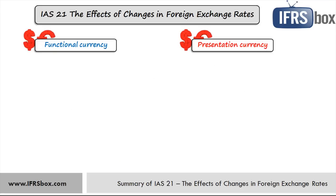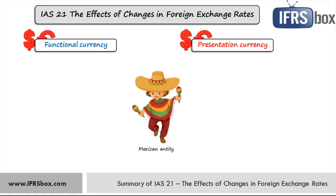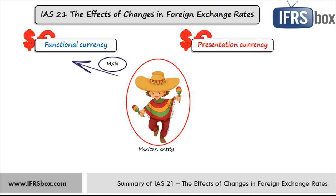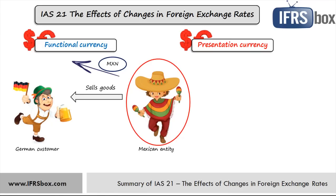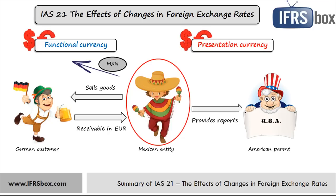Imagine there is a Mexican entity that operates in Mexico. The majority of its expenses are in Mexican peso, so its functional currency will be Mexican peso in most cases. Let's say that this Mexican company sells goods to German customers and as a result has a receivable in Euro. The Mexican company then needs to translate the amount of this receivable to its functional currency, Mexican peso. Now, let's say this Mexican entity is a subsidiary of an American parent company, and therefore the Mexican company needs to provide financial reports to its parent. So the Mexican company needs to translate its own financial statements in pesos to the presentation currency, which is US dollar in this case. Of course, the Mexican company can present its financial statements in a different presentation currency too, when needed.